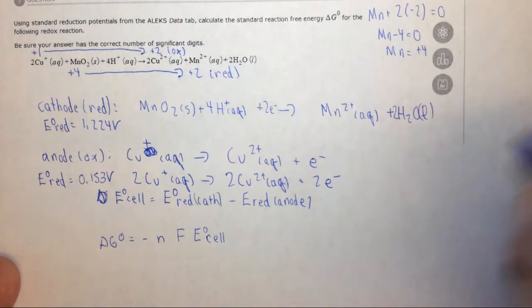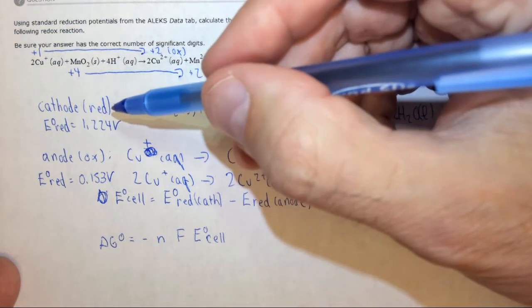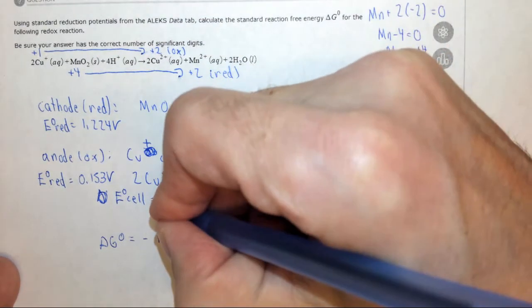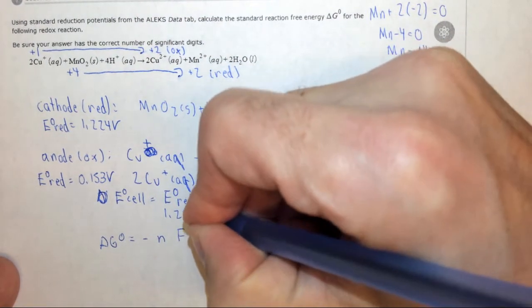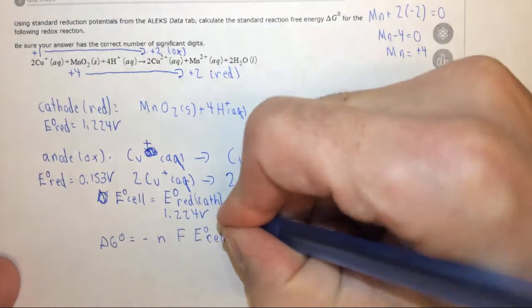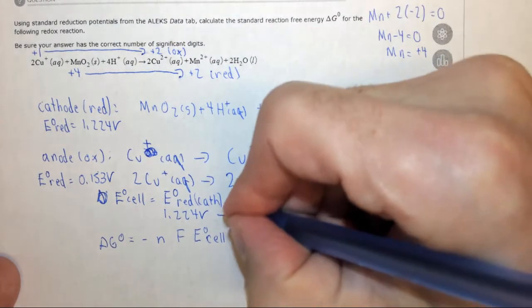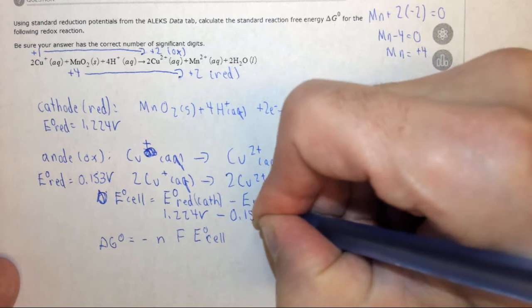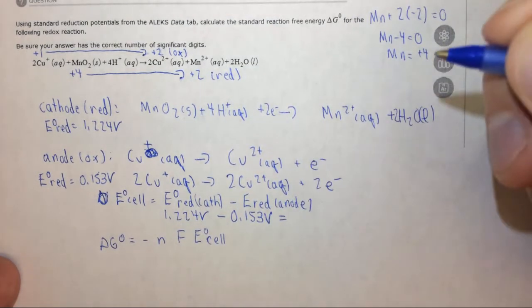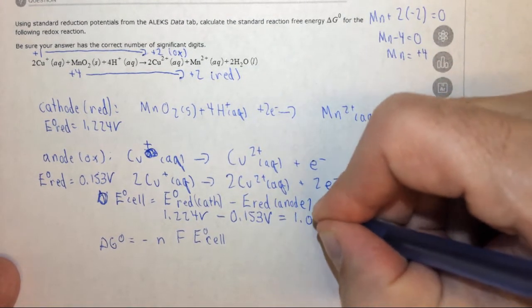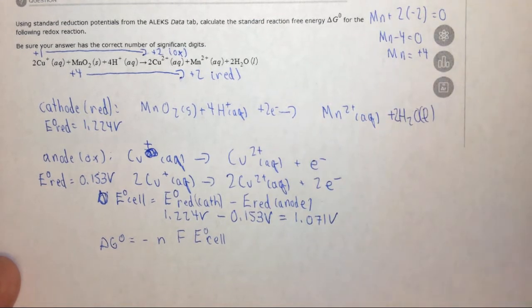So in this case, at the cathode, the reduction potential is 1.224 volts, minus the reduction potential at the anode, which is 0.153 volts. And when you subtract those two numbers, you get 1.071 volts.